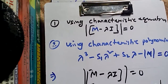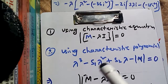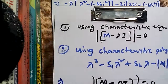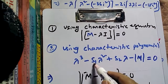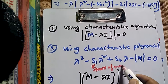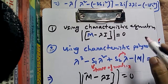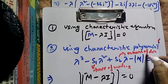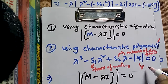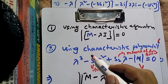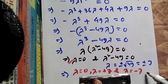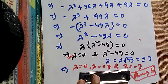In the next class we will also find the eigenvalues using the characteristic polynomial, where S1 is the trace of the matrix, S2 is the sum of minors of the diagonal elements, and the last term is the determinant of the matrix. For today, the answer is B: minus seven, zero, seven. Thank you.